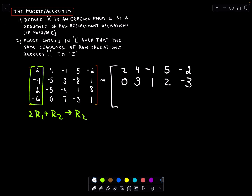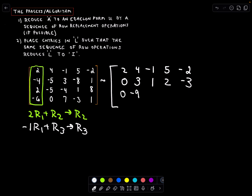I also want to get a 0 in the third row first column. I could take negative the first row and add to that the third row to get my new third row. You can check my arithmetic — I got 0, negative 9, negative 3, negative 4, and 10. Last but not least, I could take 3 times the first row and add to that the fourth row to get my new fourth row. You can check my arithmetic — I got 0, 12, 4, 12, and negative 5.